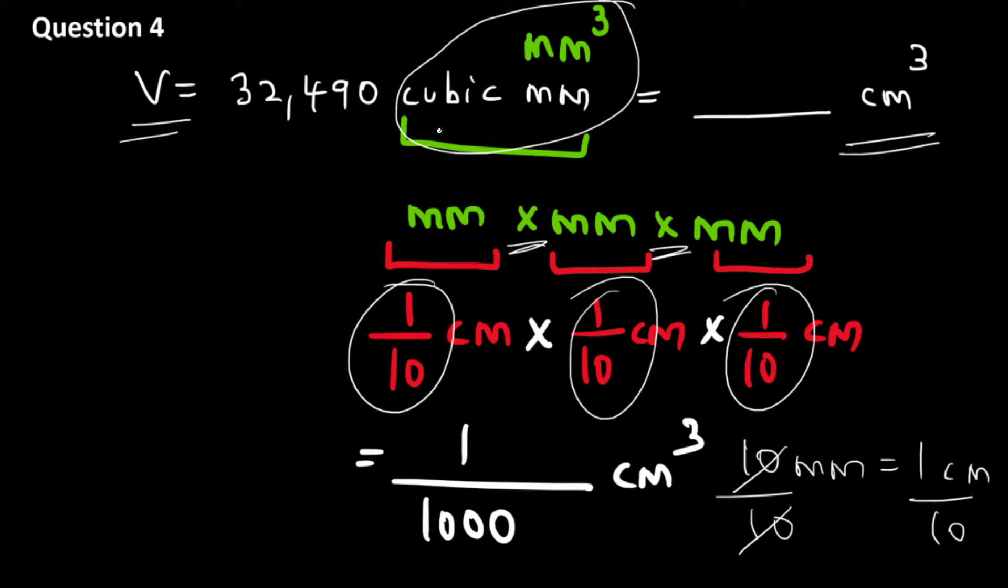Now we need to convert 32,490 millimeter cube into centimeter cube. And we have just found that one millimeter cube is equal to one by thousand of a centimeter cube. Therefore these many millimeter cube will be nothing but 32,490 into one by thousand centimeter cube. So that gives us the answer.